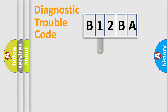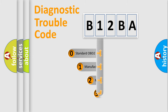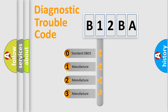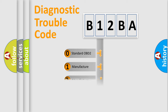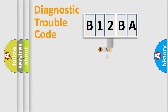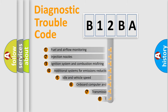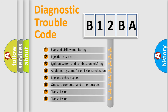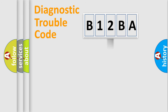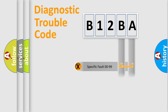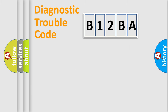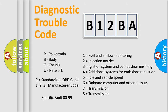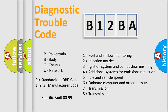This distribution is defined in the first character of the code. If the second character is expressed as zero, it is a standardized error. In the case of numbers one, two, or three, it is a more specific manufacturer-defined error. The third character specifies a subset of errors. This distribution is valid only for the standardized DTC code, and only the last two characters define the specific fault of the group.